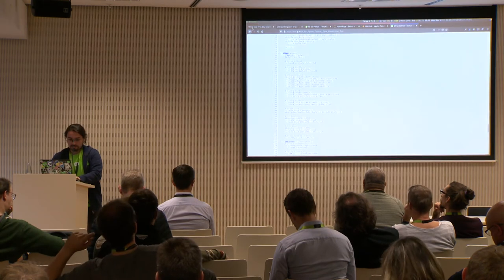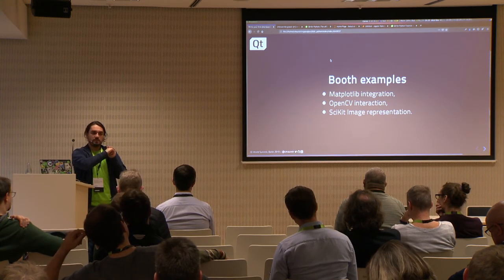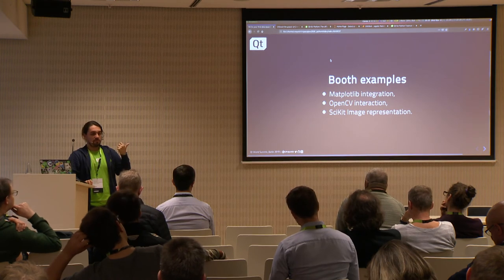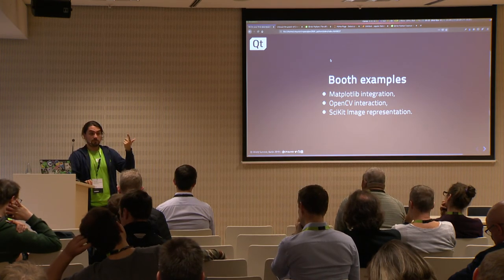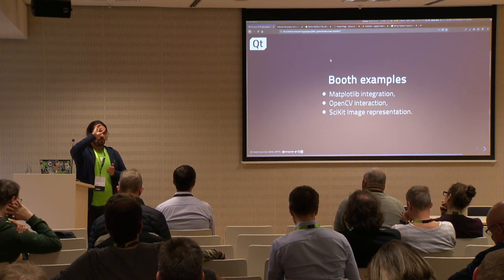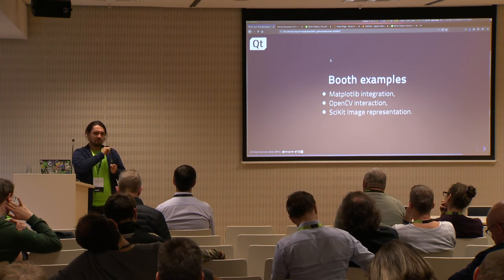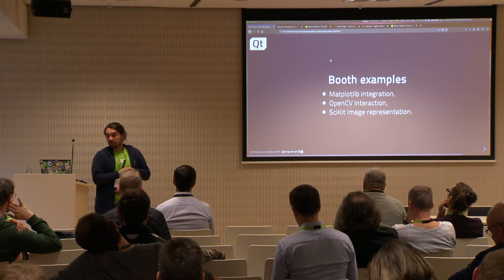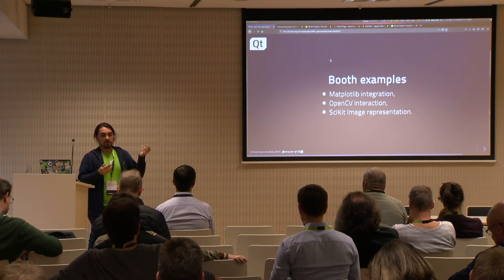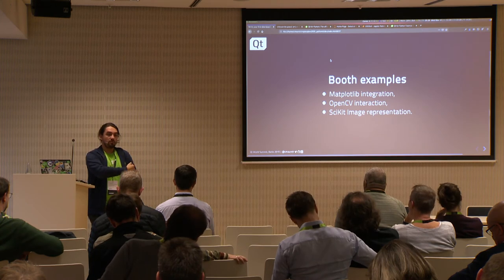Going back to the presentation: the booth was showing three or four examples. The first is the matplotlib integration — there was a 3D plot, because matplotlib uses Qt as a backend. There was also a camera example that loads trained modules to detect someone's face. And another with scikit-image that you can apply to images. These three examples will soon be in the official repository. The idea for the next step of Qt for Python is to be more integrated in the broader Python ecosystem.